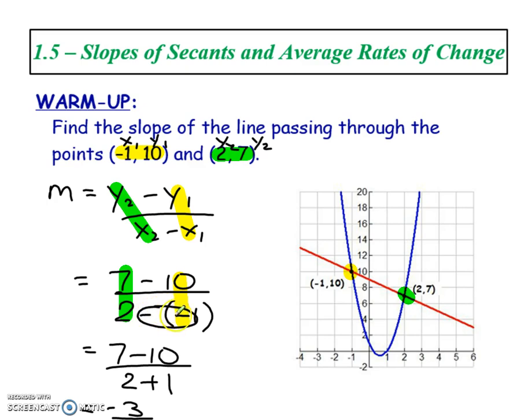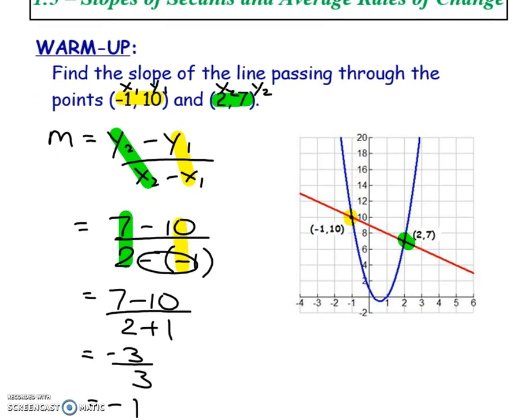Now simplify means if there are any symbols right beside each other, combine them. A negative and negative make a positive. Then you get 7 minus 10 on the top, and 2 plus 1 on the bottom. When you evaluate, negative 3 over 3 gives you a negative 1 slope, and that makes sense because this is a decreasing slope, which means a decline.